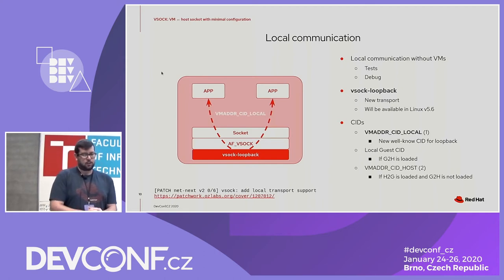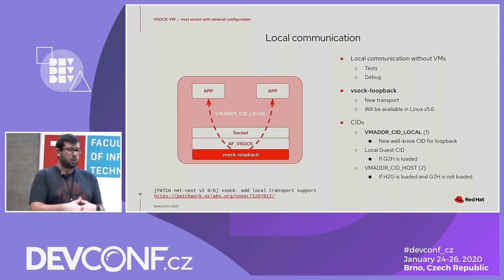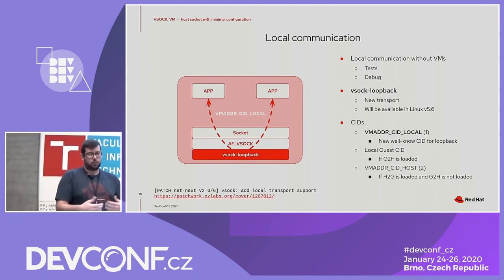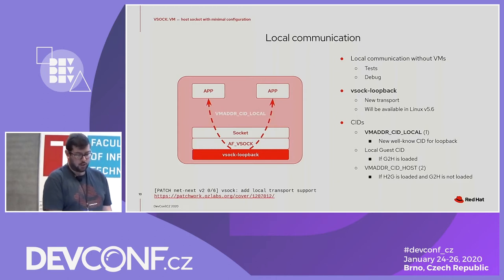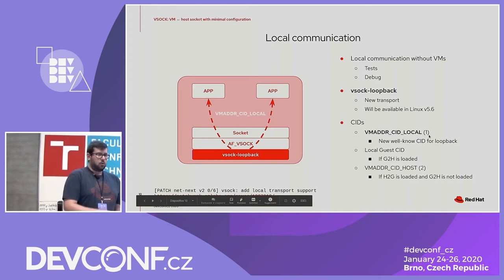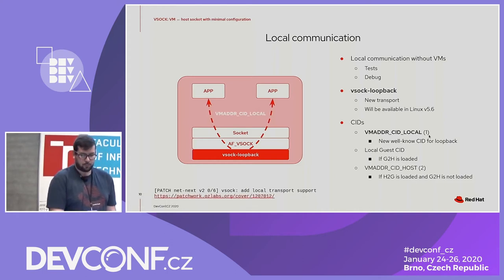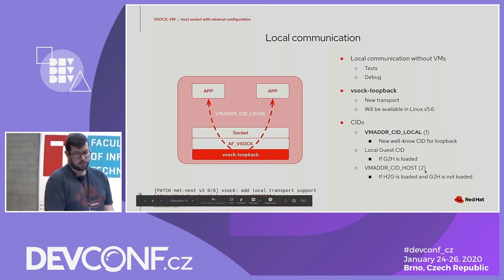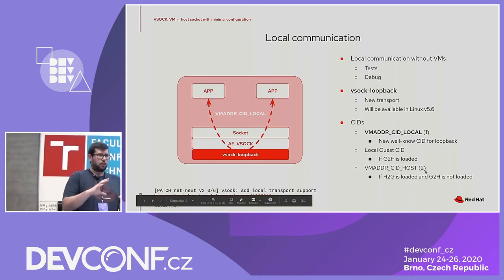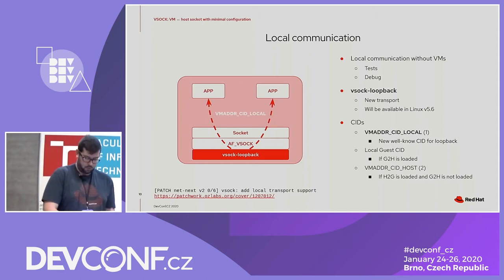Another recently added feature is local communication, very useful for testing and debugging applications that use VSOCK without running VMs — think about CI environments where it's not simple to start a VM and synchronize tests between host and guest. We introduced the VSOCK loopback, available in Linux 5.6, along with a new CID — CID_LOCAL with value 1 — used for local communication on the same host. Other CIDs can also be used: inside a guest, use the CID assigned to that guest; on an L0 host, you can use CID_HOST for local communication since there are no VMs beneath.